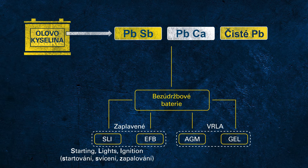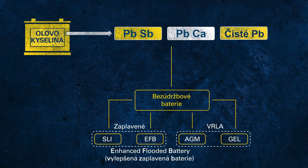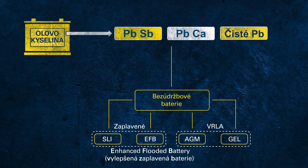SLI stands for starting, lights, and ignition, which describes the main duties of a conventional starter battery in a conventional vehicle. EFB stands for enhanced flooded battery. This is not a protected term, so any change one applies to an SLI might then be called an EFB. Usually EFB indicates a flooded battery with improved cycling capabilities. However, as this is still a flooded battery, it is not as robust as the VRLA technology.